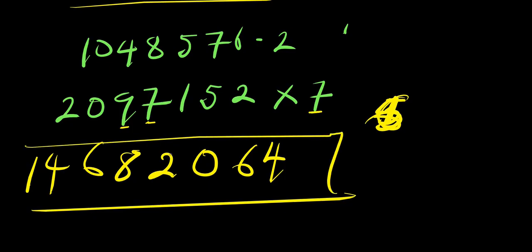Correction: 7 times 1 is 7, add the carry 3, that is 10 — write 0 carry 1. Then 7 times 7 is 49 plus 1 is 50 — write 0 carry 5. Then 7 times 9 is 63 plus 5 is 68 — write 8 carry 6. 7 times 0 is 0 plus 6 is 6. 7 times 2 is 14. So that place is 0, not 2. This gives our final result.